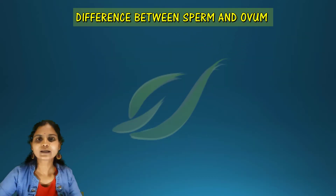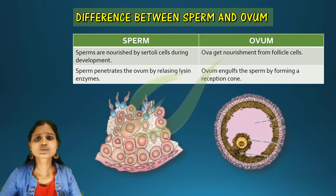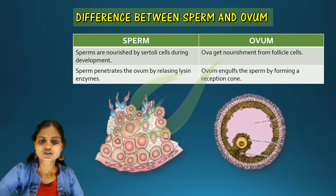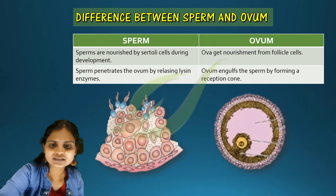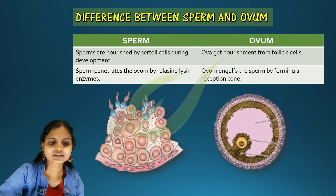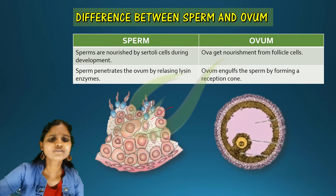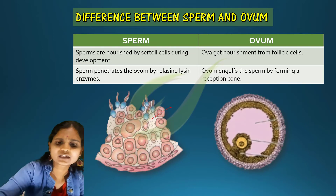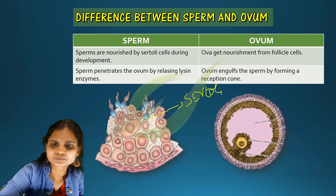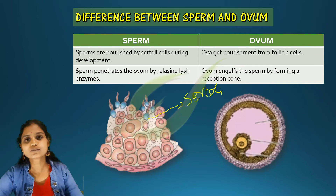After formation, sperms get nourishment from Sertoli cells. When it comes to the ovum, the developing ova get nourishment from the follicles.